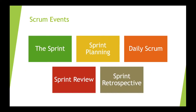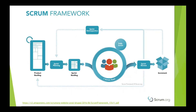The Scrum framework defines five events, which together represent the increment. The sprint is a container for the other four events. A sprint begins with sprint planning, with a daily scrum occurring each day, ending with a sprint review, followed by the sprint retrospective.